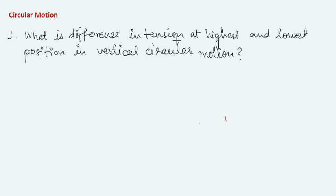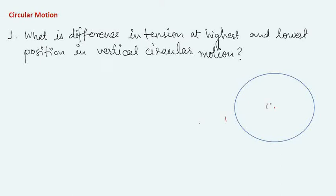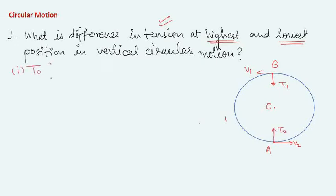The first problem is: what is the difference in tension at the highest and the lowest position in vertical circular motion? Suppose there is a circle with center O. Let's call the highest point B and the lowest point A. Let the velocity at highest point B be v1, and at lowest point A be v2. The tension at B is towards O, called t1, and at A it is t2.